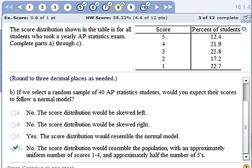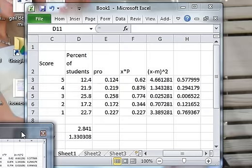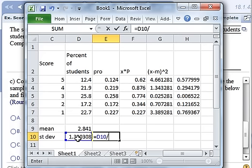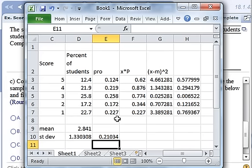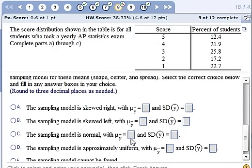Okay. And then we can continue. And now it says, consider the mean scores of random samples of 40 students. Describe the sampling model. It's going to be normal, and it's going to have a mean the same as the sample mean, but it's going to have a standard deviation equal to that standard deviation divided by the square root of 40. So equals this divided by the square root of 40. It's going to be 0.221 for the standard deviation, but the mean is going to be the same. So it's going to be normal.